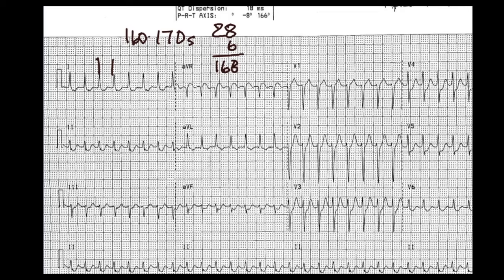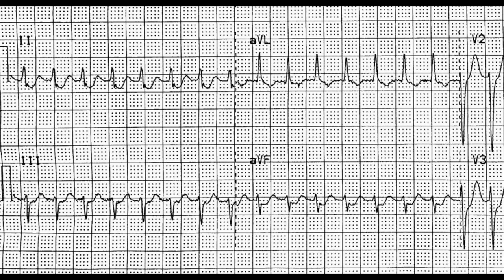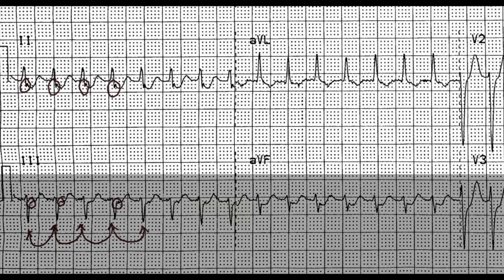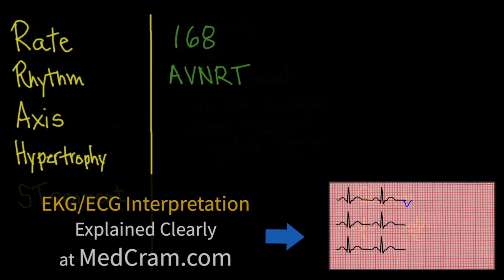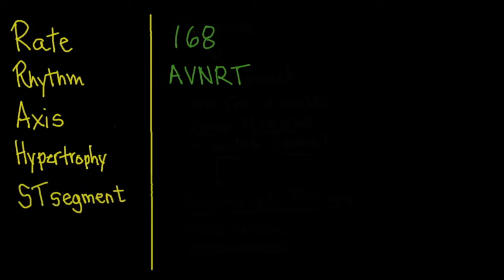This is a 10-second strip, so multiplying by 6 gives us beats per minute. That's rate. For rhythm, we look at each QRS complex to see if there are P waves and whether they're regular. Zooming in, you can see a little P wave after each QRS complex, with some notching. This is very fast — tachycardia — and also very regular, with P waves after the QRS. This pattern is consistent with AV nodal reentrant tachycardia, so the rate is 168 and the rhythm is AVNRT.